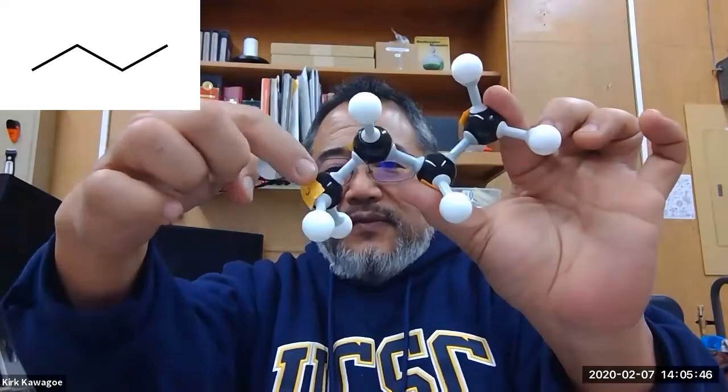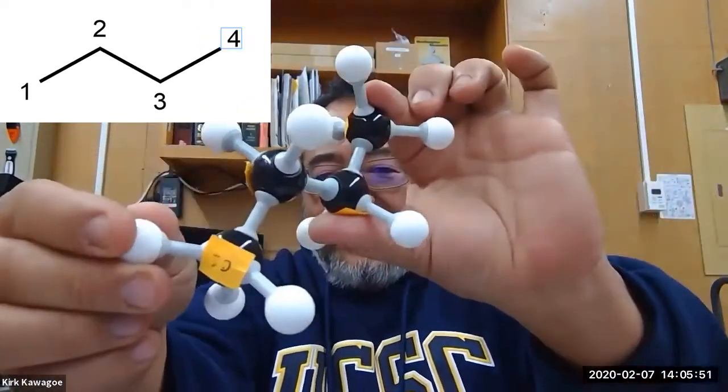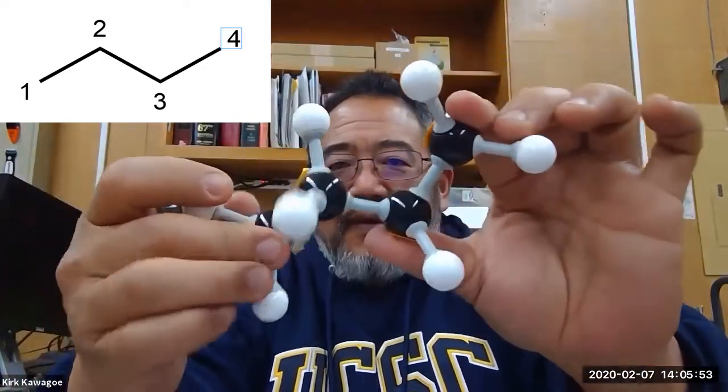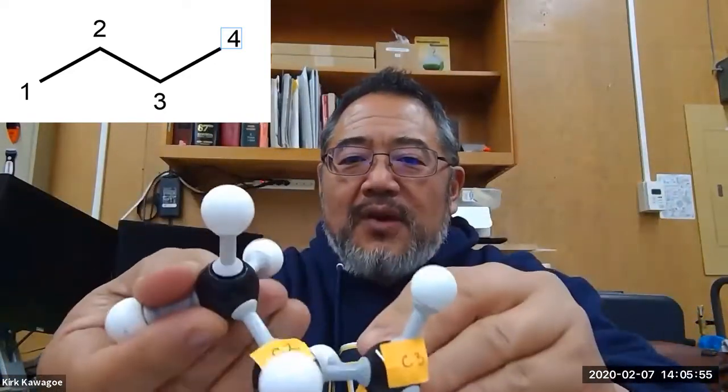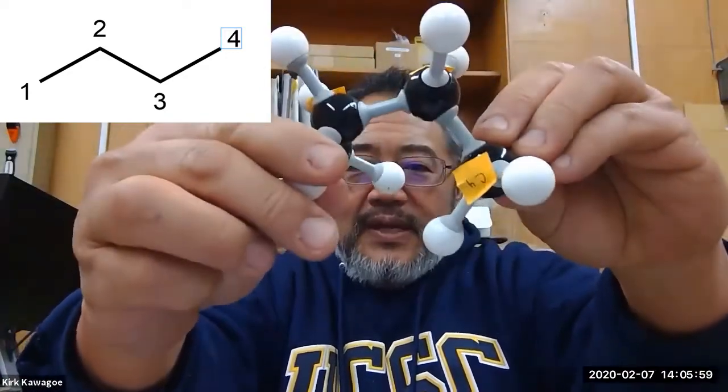Carbon one is over here on line one, two, three, four, and then I labeled them so that you can see carbon one, right, and if I turn this like this you can see carbon two and carbon three, rotate as carbon four.